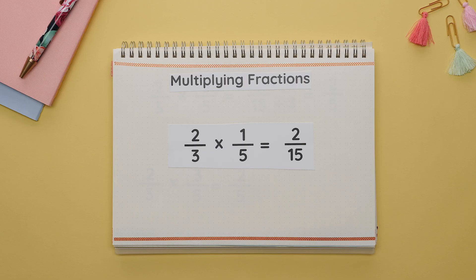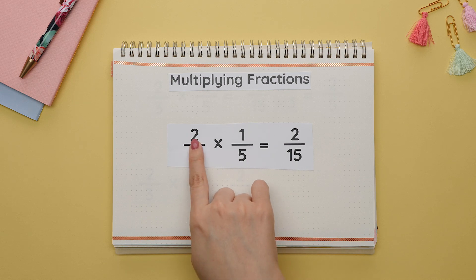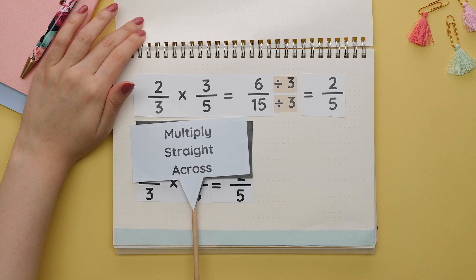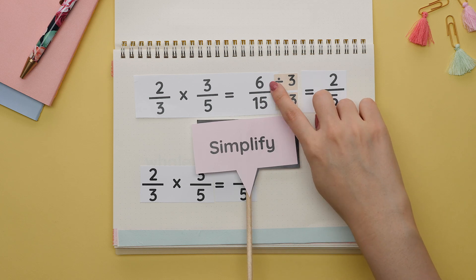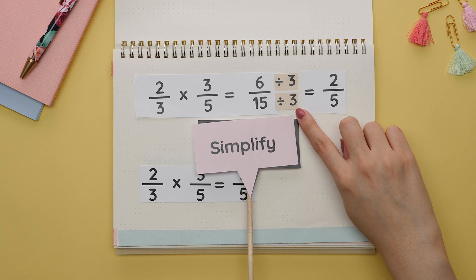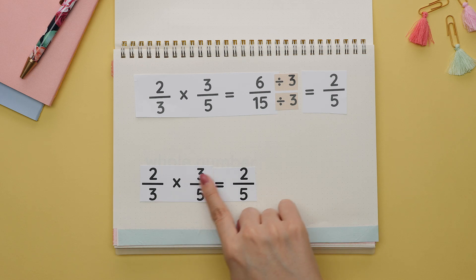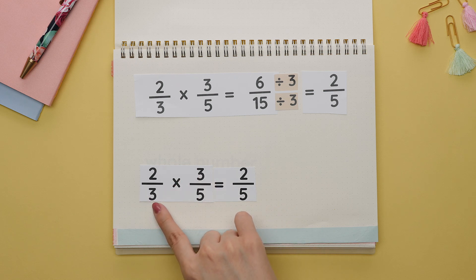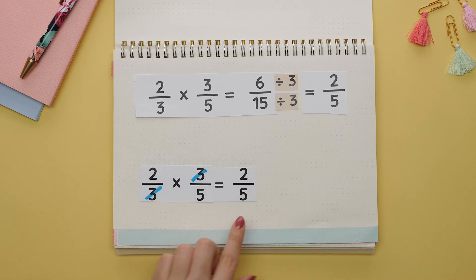Let's start with reviewing how to properly multiply two fractions together. For multiplication you do not need a common denominator — it's fine that these numbers are different. All we have to do is multiply each number straight across to get our answer. For the next example we can multiply straight across, but note that the resulting fraction is not completely simplified — both numbers can be divided by three. The correct answer is two-fifths. We could have also seen that the threes are across from each other: one on the denominator and one on the numerator, so we can cancel them out immediately to get two-fifths.